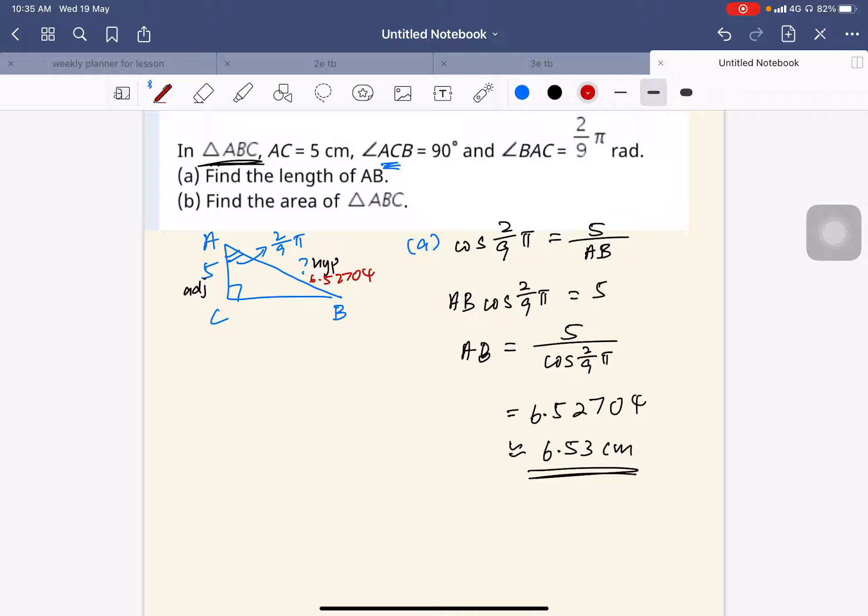So now I need to find area of triangle ABC. So there are two methods. First method is to use your half base times height. So you need to use Pythagorean theorem to find BC. So that's one method.